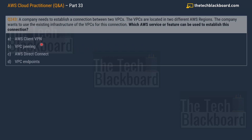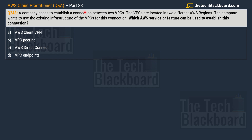Question 243: a company needs to establish a connection between two VPCs located in two different AWS regions, using the existing infrastructure of both VPCs. Which AWS service or feature should be used? Options: A — AWS Client VPN, B — VPC Peering, C — AWS Direct Connect, D — VPC Endpoints. Notice the question says we are establishing a connection — pairing — between two VPCs in different regions. Try linking key words to AWS concepts to identify the answer.